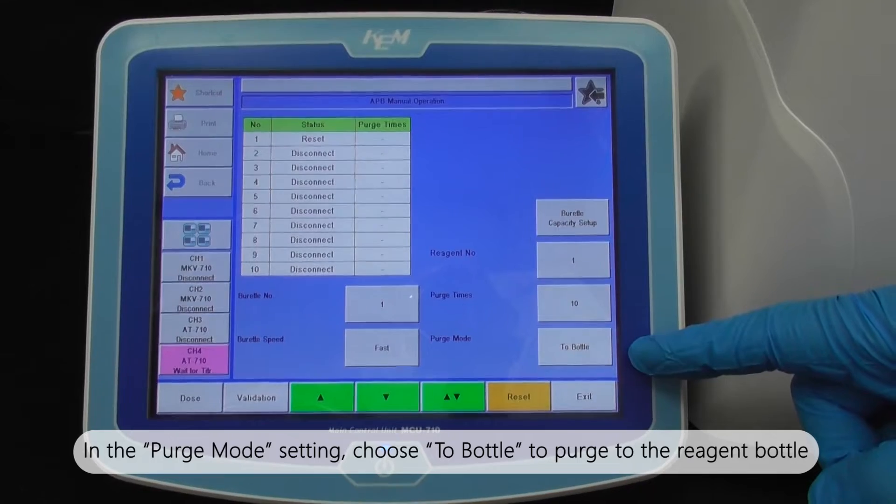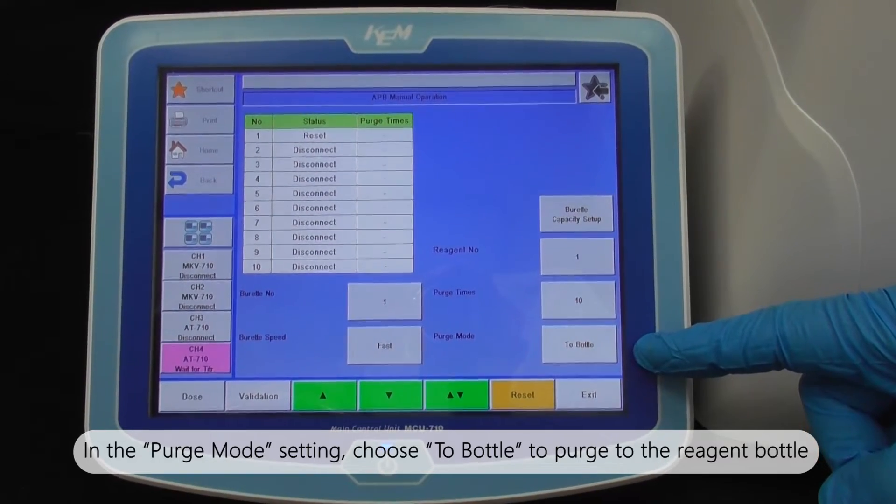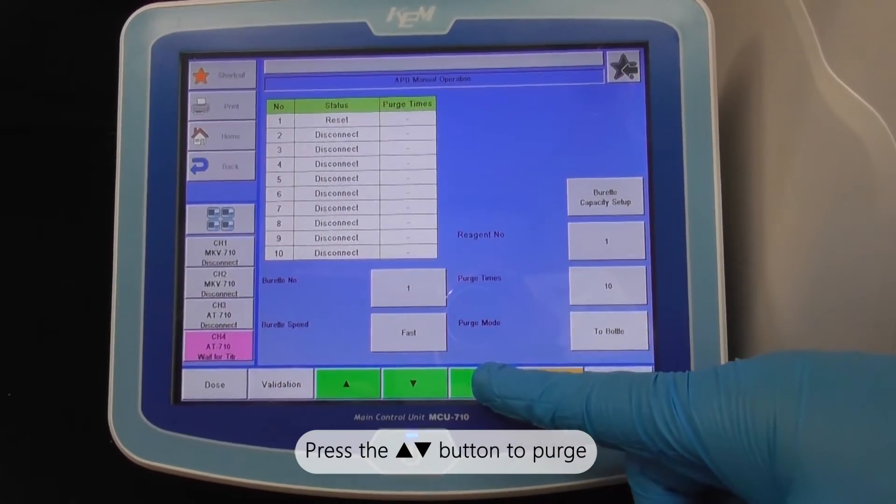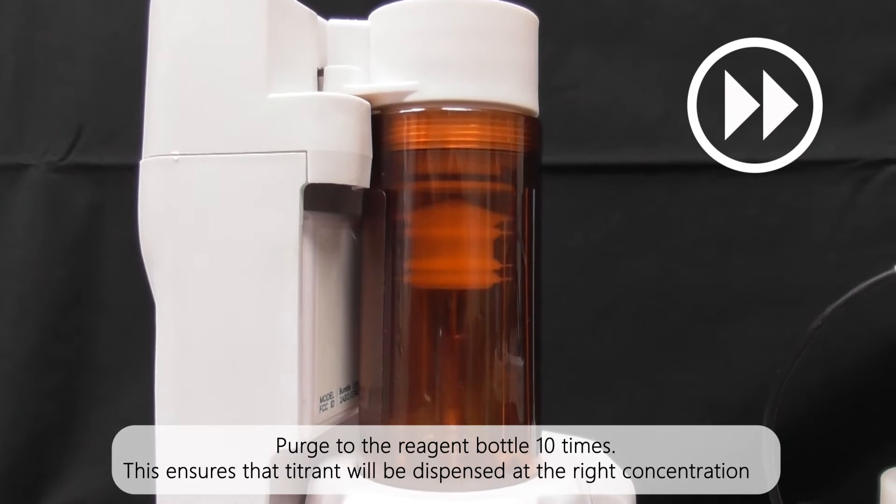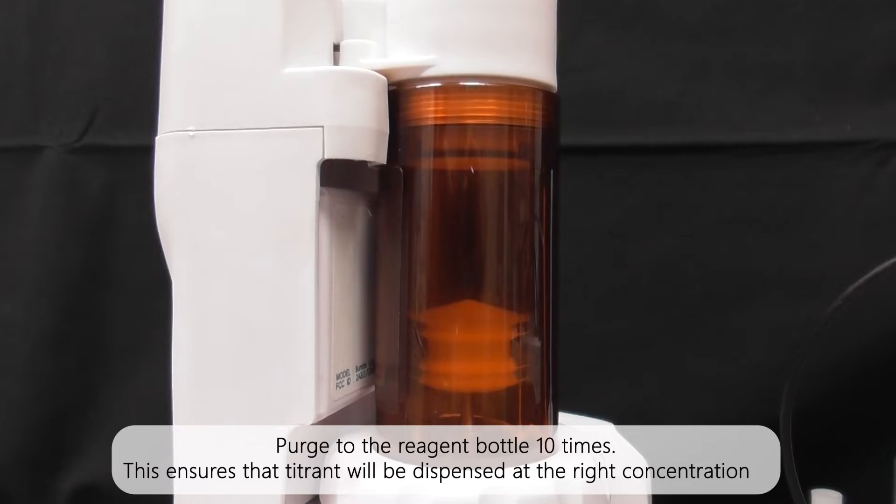In the purge mode setting, choose 2 bottle to purge to the reagent bottle. Press the up down button to purge. Purge to the reagent bottle 10 times. This ensures the titrant will be dispensed at the right concentration.